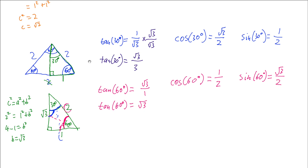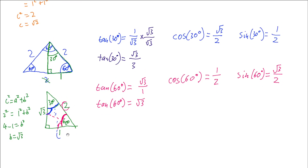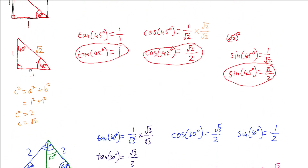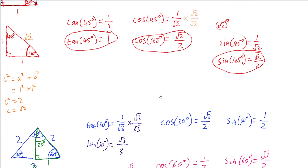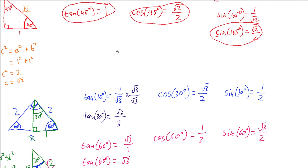So by constructing these two triangles — the 30-60-90 triangle with sides 1, 2, root 3, and the 45-45-90 triangle with sides 1, 1, root 2 — we can get exact values for tangent, cosine, and sine of 45 degrees, 30 degrees, and 60 degrees without using a calculator. Some people write this out into a table and memorize it, which might work for you. But if you can't remember the values, knowing how to construct these triangles can help you work them out. You can also use this to find any integer multiple of these angles — for example 135 degrees, which is a multiple of 45 degrees. In a future video I'll show you how to do that.